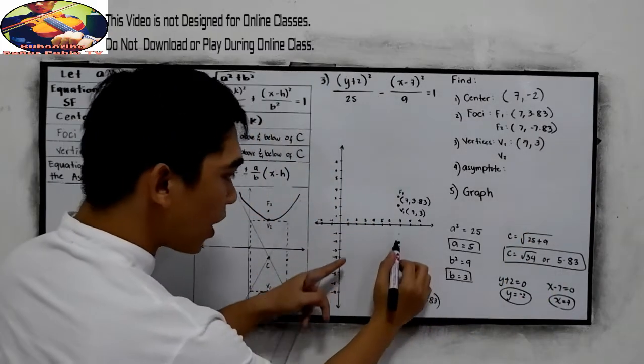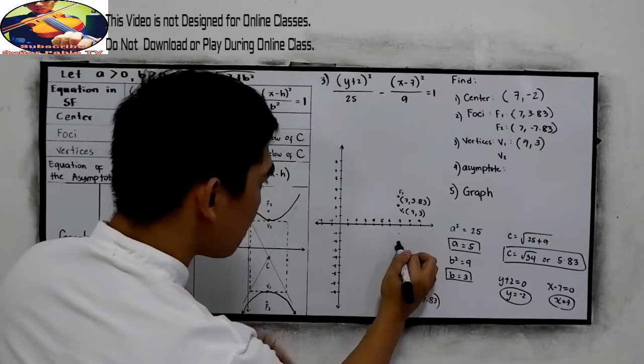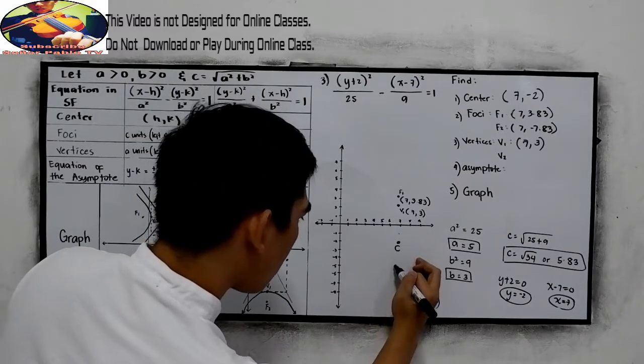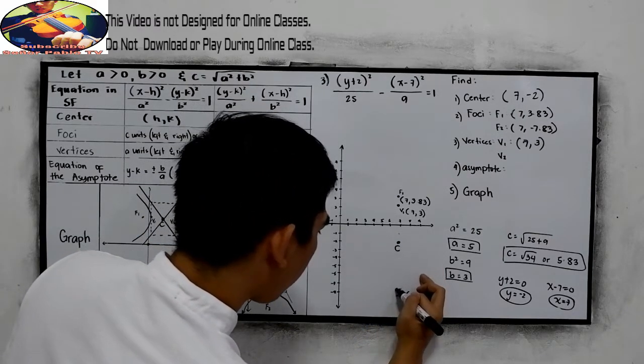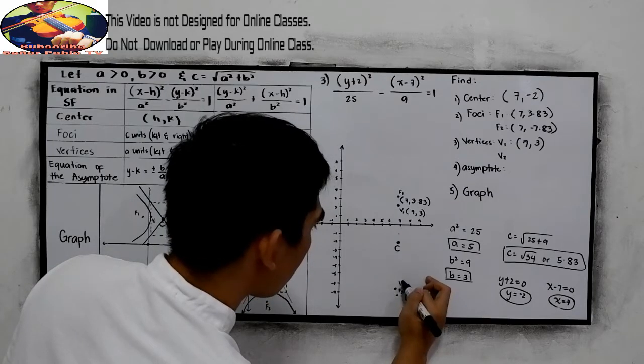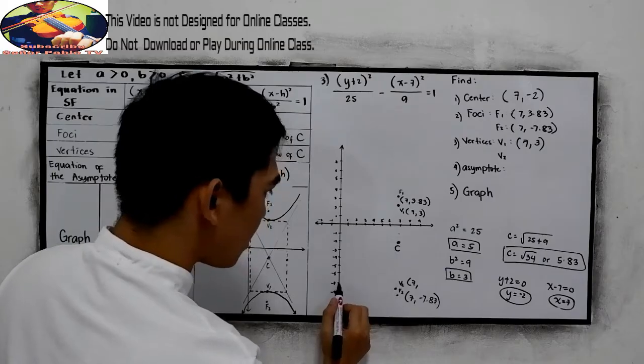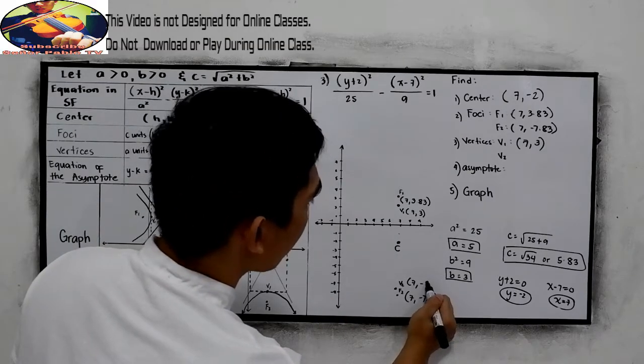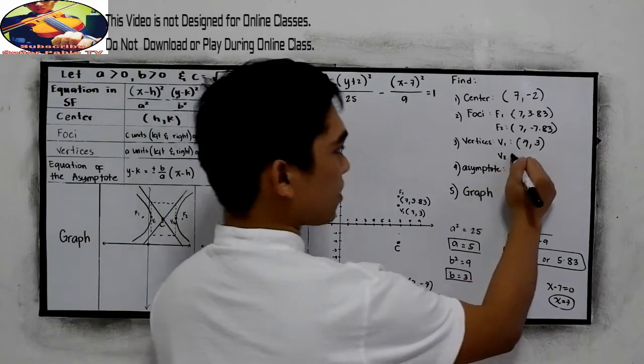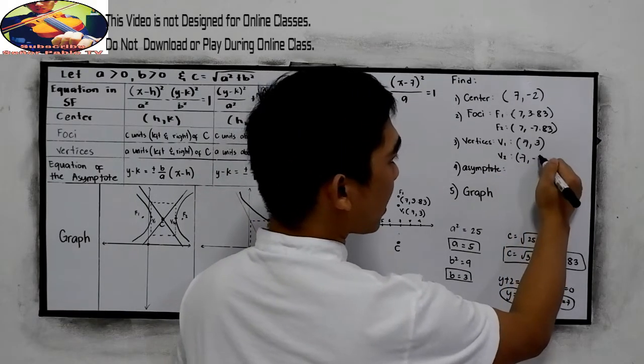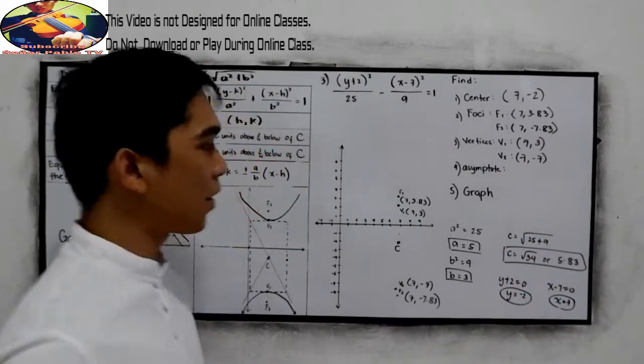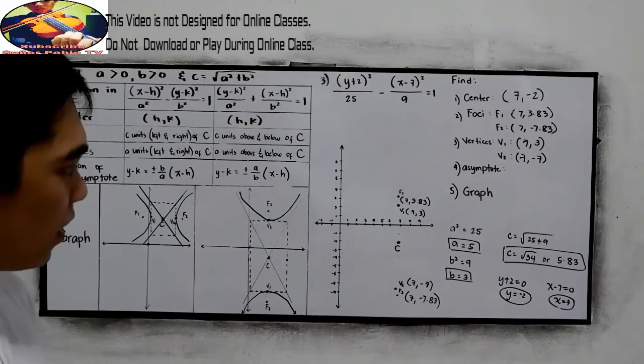And the other one, 5 units below. So 1, 2, 3, 4, 5. So minus sub 2, 7, then negative 7. So 7 and negative 7.